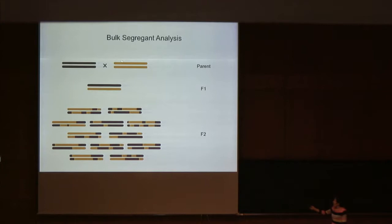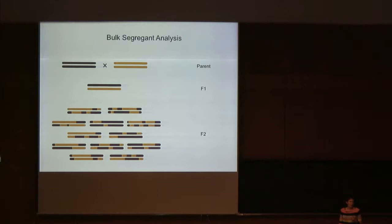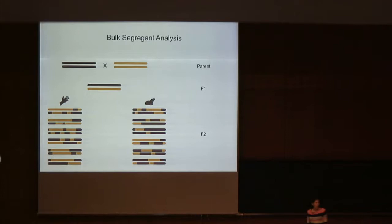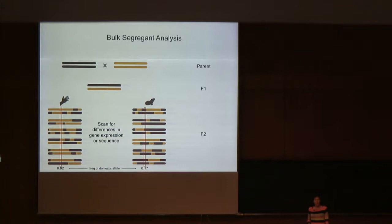To do that we used a bulk-segregant analysis. We started with a cross between a forest colony and a domestic colony to create a large number of F1 hybrids, then mated F1 hybrids to each other to produce a large population of F2 hybrids. In the F2s, each individual carries a unique combination of alleles from the two grandparents. We use our olfactometer assay to identify F2s at the two ends of the behavioral spectrum — those that strongly respond to humans and those that strongly respond to guinea pigs. The only consistent differences we should see when comparing the transcriptomes of these two groups are differences in areas that causally affect preference or are physically close to other changes that causally affect it.